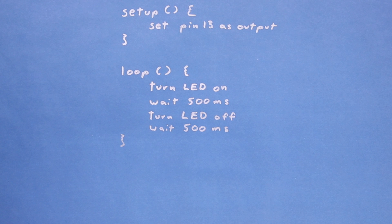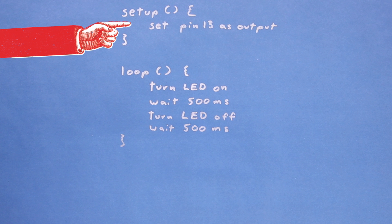Because this is Arduino, we know that we'll have two functions, setup and loop, that have already been declared for us. As mentioned earlier, we want to tell the Arduino that pin 13 should be an output. So, we'll write set pin 13 as output in the setup function. We can figure out the exact command for it later.